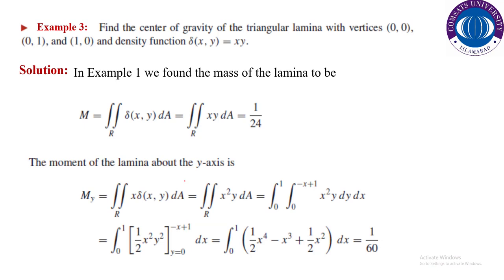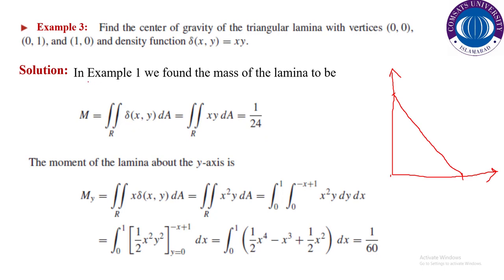Find the center of gravity of a triangular lamina with vertices (0,0), (0,1), and (1,0) with density δ(x,y) = xy. This is the same geometry as before. We already calculated the mass of this lamina as M = 1/24. Now we will calculate My: it equals the integral of x·δ(x,y) dA = integral of x²y dA. Using the type 1 integral constructed before with the same limits, we integrate with respect to y (giving y²/2), apply limits, then integrate with respect to x to get the value of My.